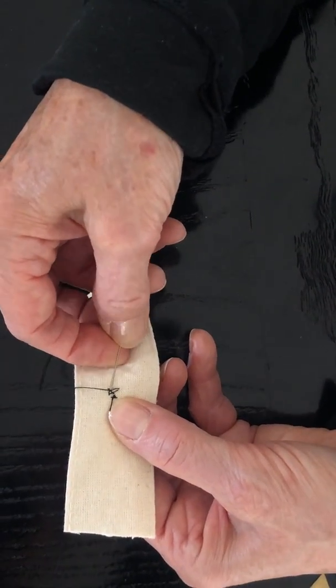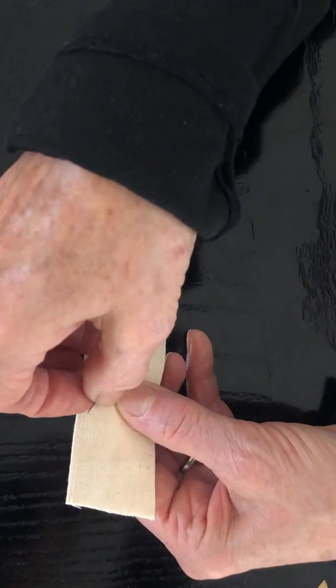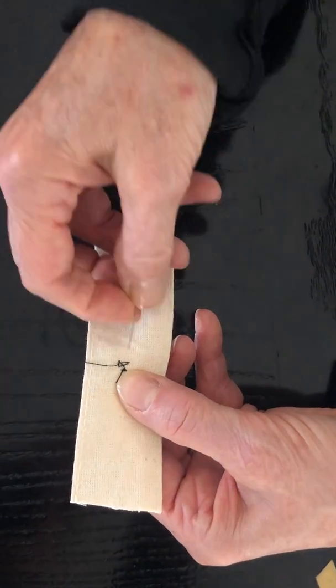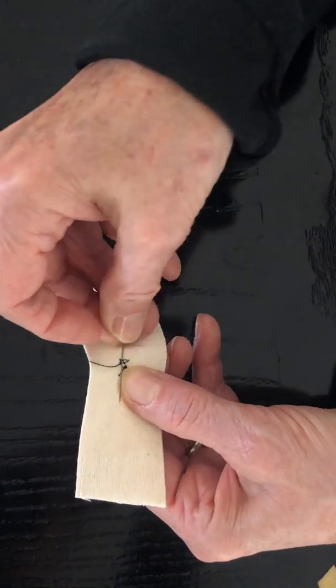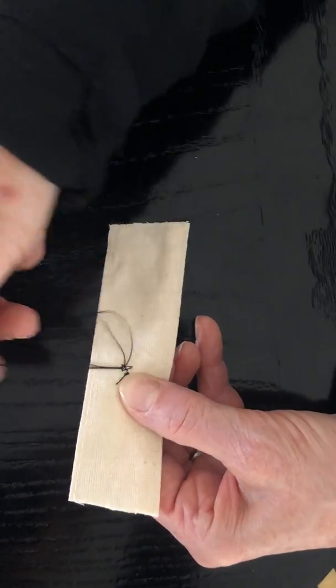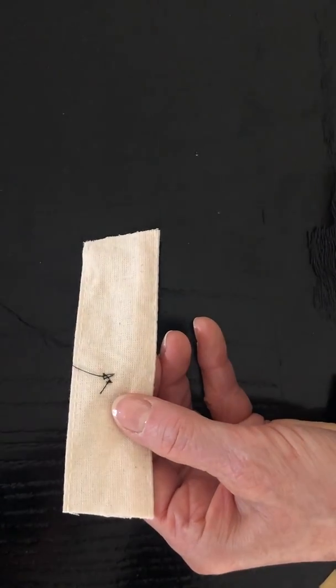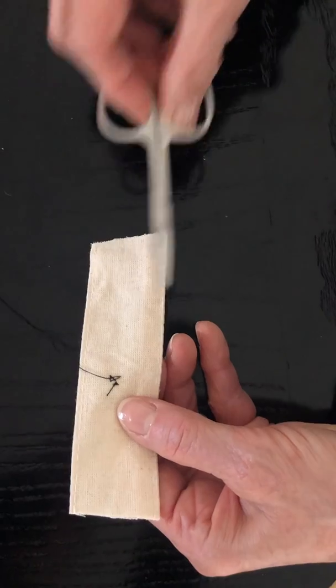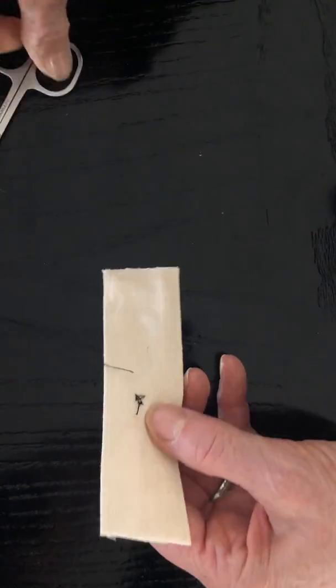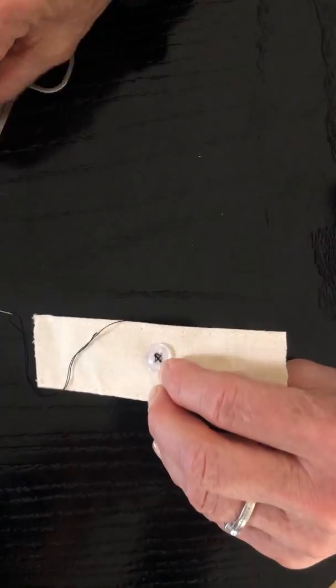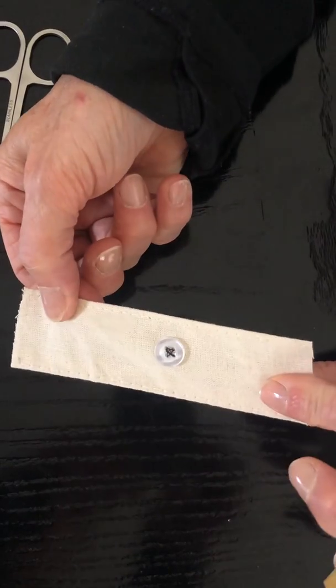Slide it again under some of the threads and pull. And one more time to secure it, cut it off and pull out your pin and you have a button.